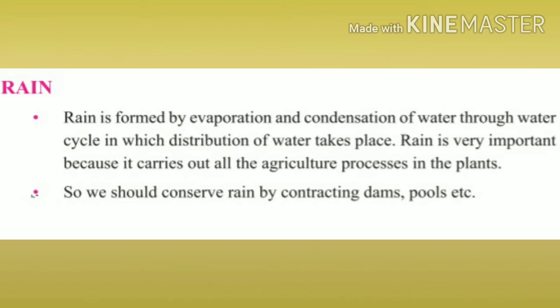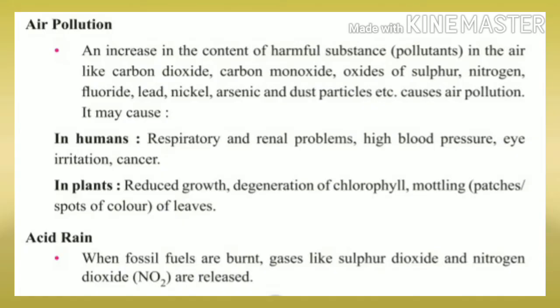Rain is important because it is used for agriculture and for growing plants quickly. It is necessary for us to conserve rainwater. We can conserve it by constructing dams, pools, etc. This is how we should conserve rainwater.